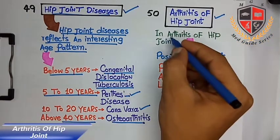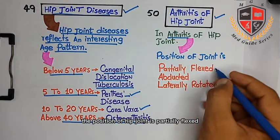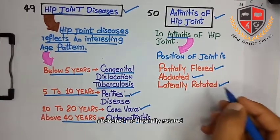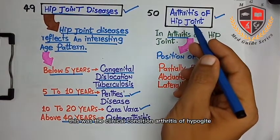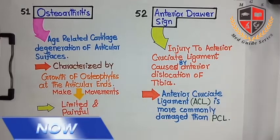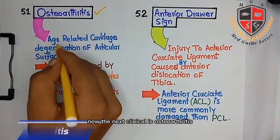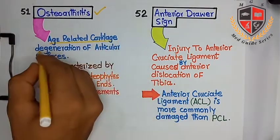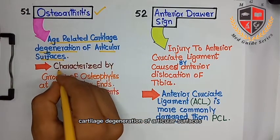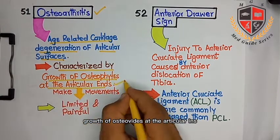The next clinical is arthritis of hip joint. In arthritis of hip joint, the position of hip joint is partially flexed, abducted, and laterally rotated. The next clinical is osteoarthritis — it is an age-related cartilage degeneration of articular surfaces.